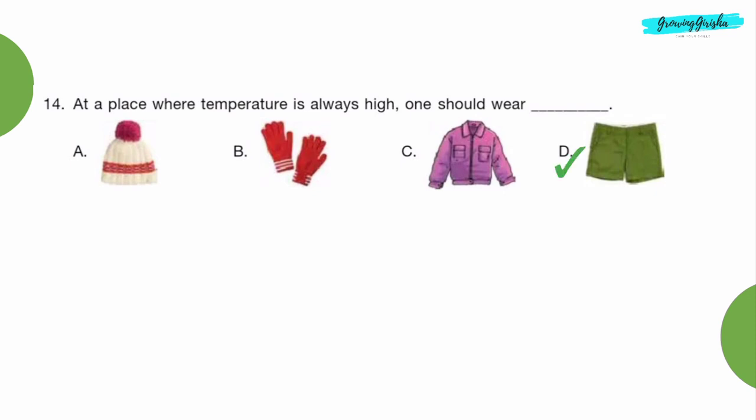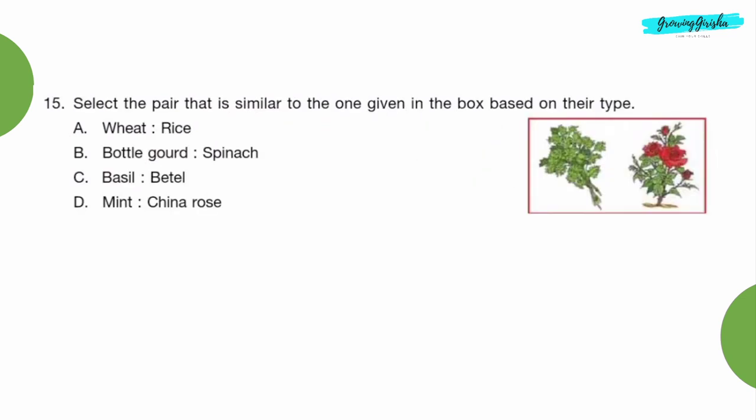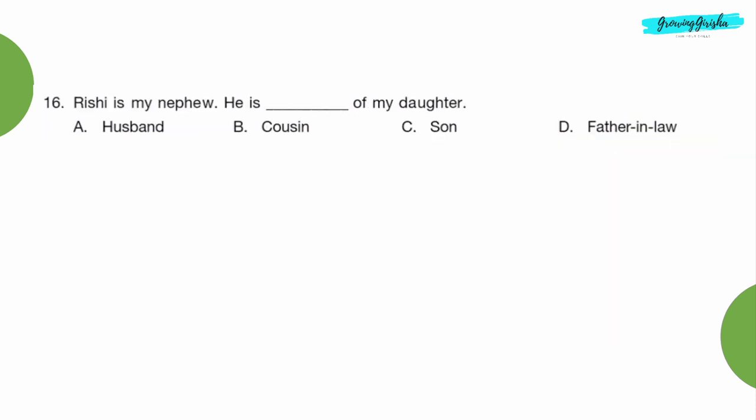Question 14: At a place where temperature is always high, one should wear dash. Option D, shorts. Question 15: Select the pair that is similar to the one given in the box based on their type.